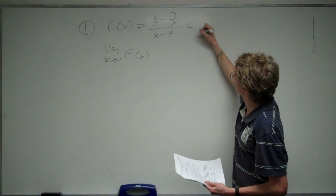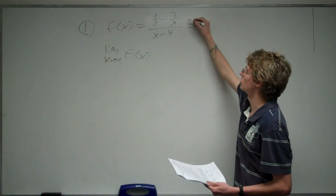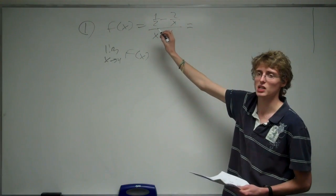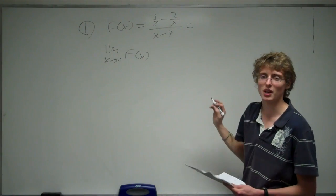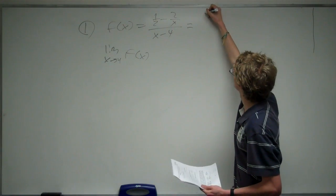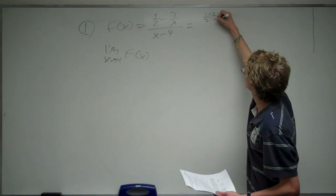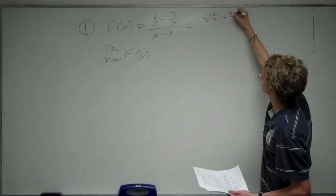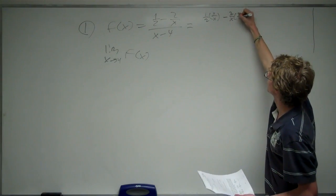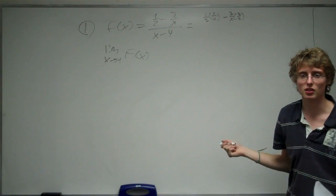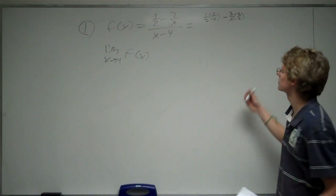So, to simplify this function, we're going to look at the numerator first, and we've got two fractions being subtracted. So to combine those into one fraction, we want to find the common denominator. So we're going to take 1 half and multiply it by x over x, and we're going to take 2 over x and multiply it by 2 over 2. And this is going to give us the common denominator of 2x.